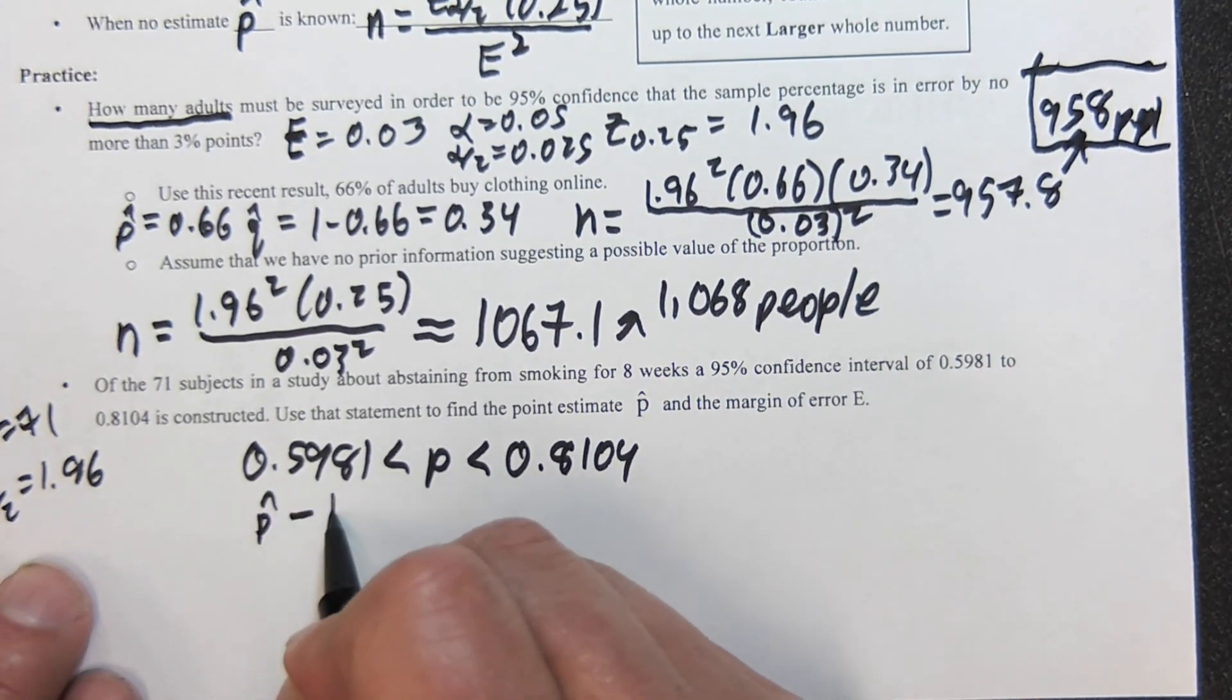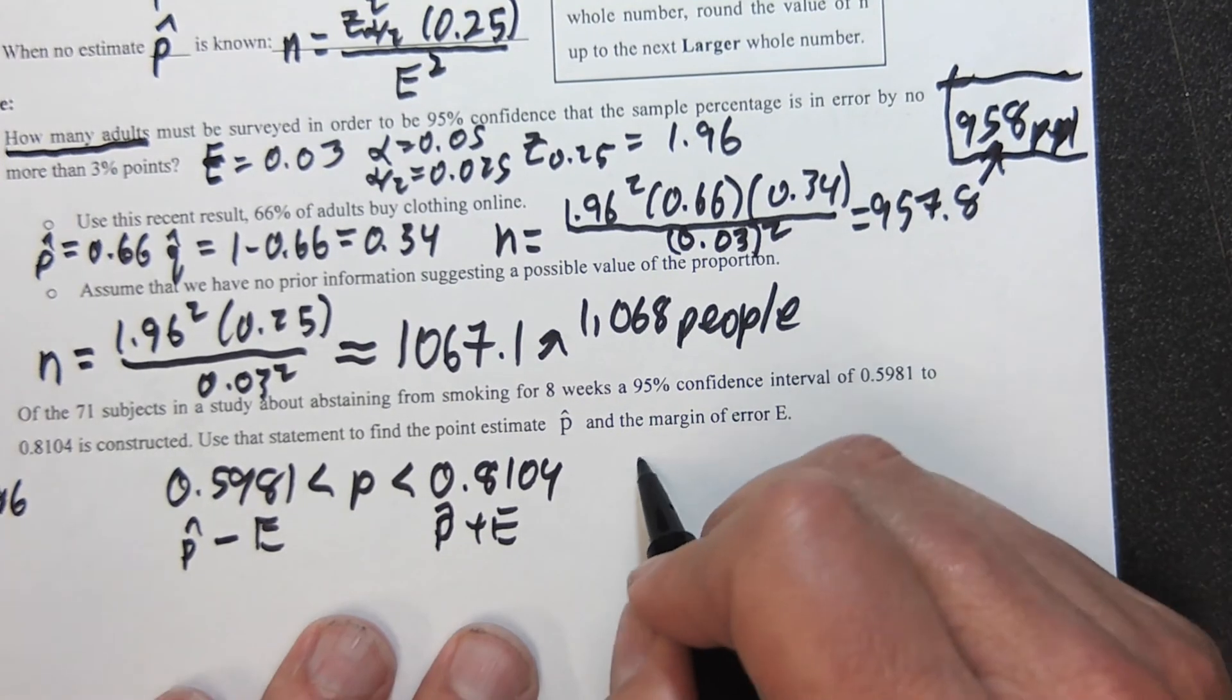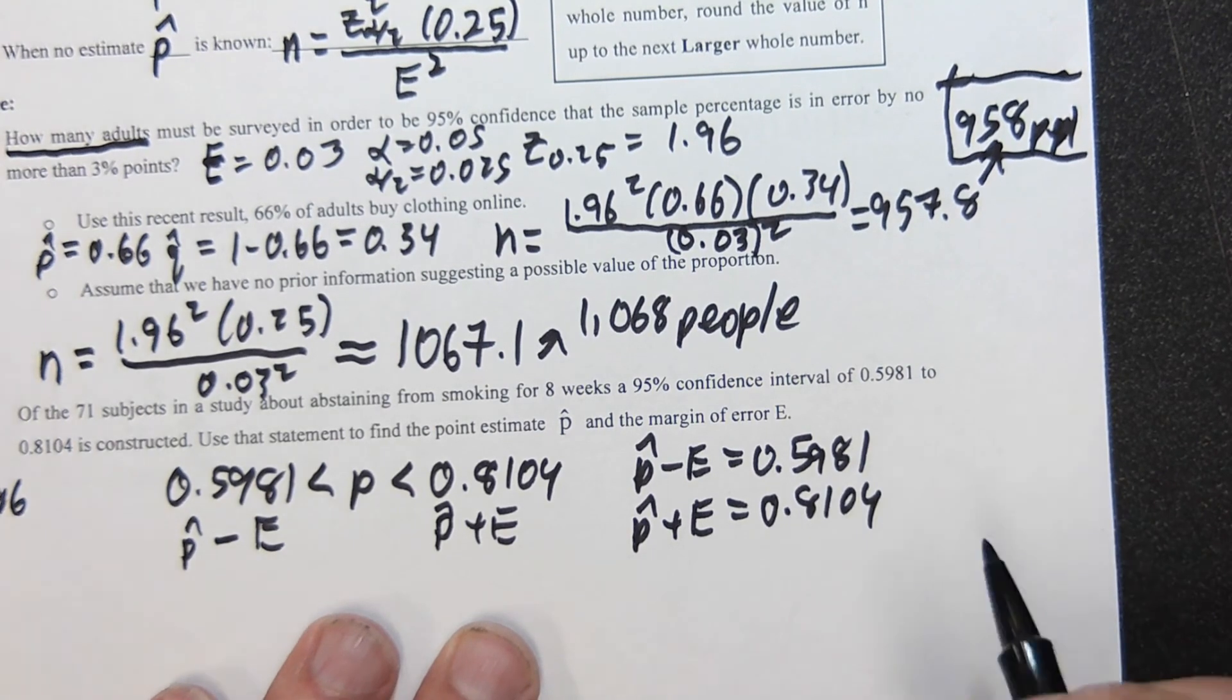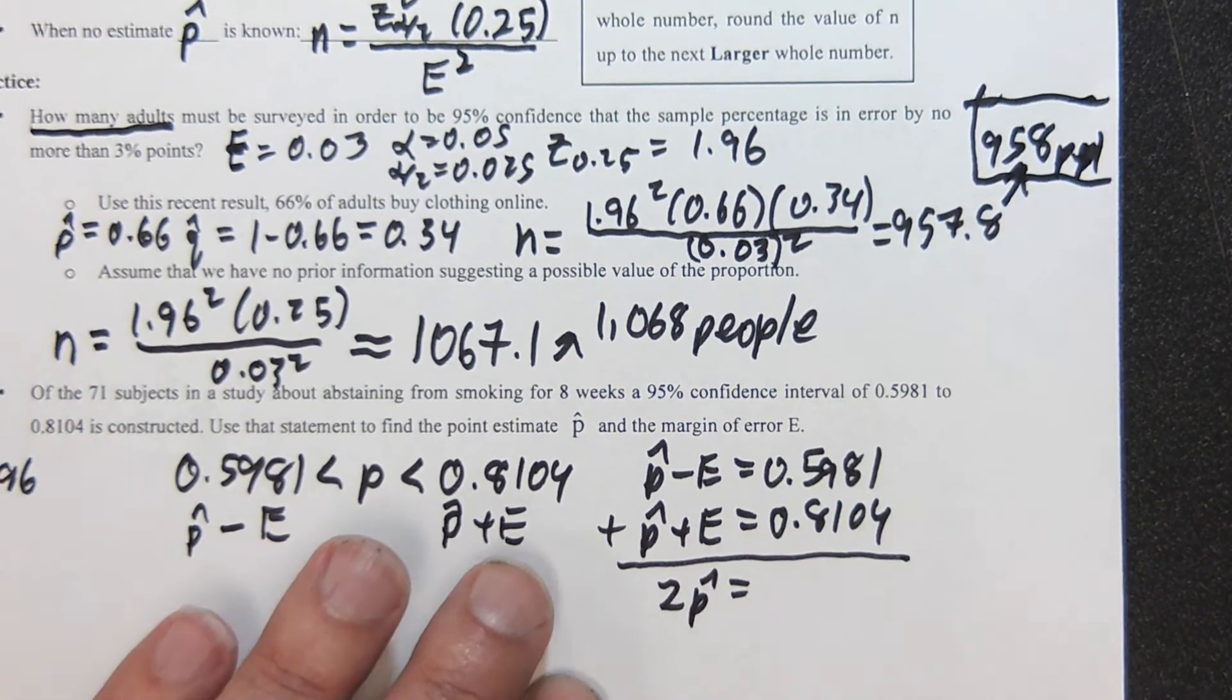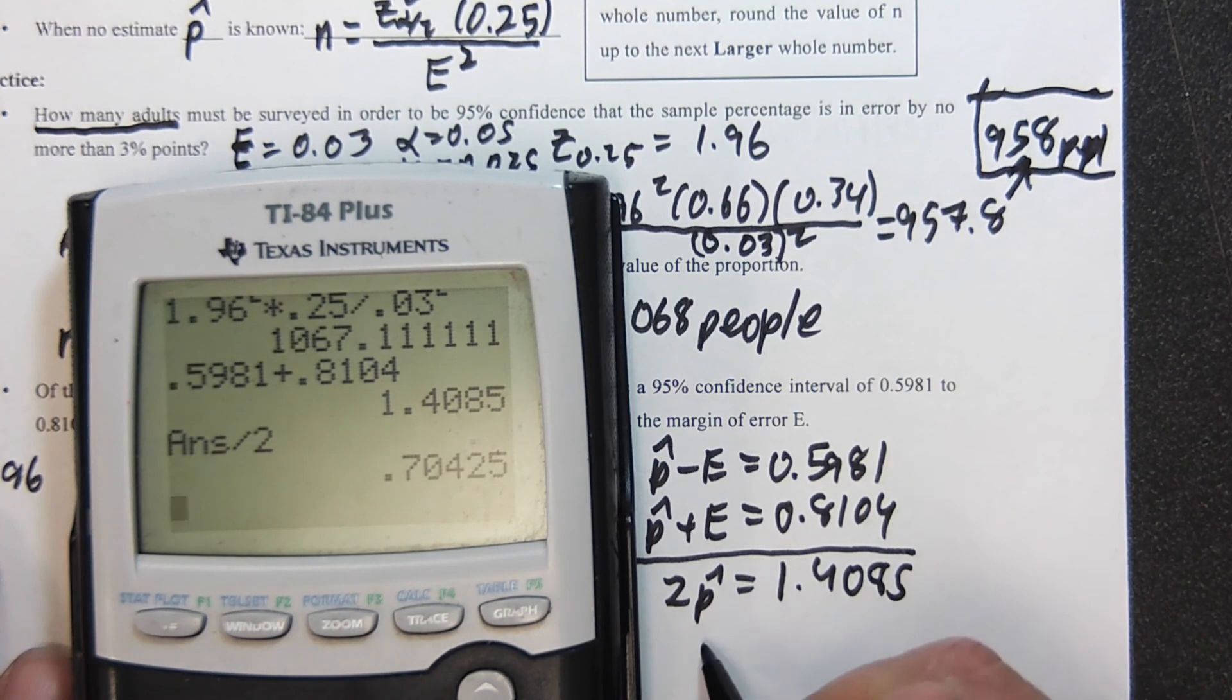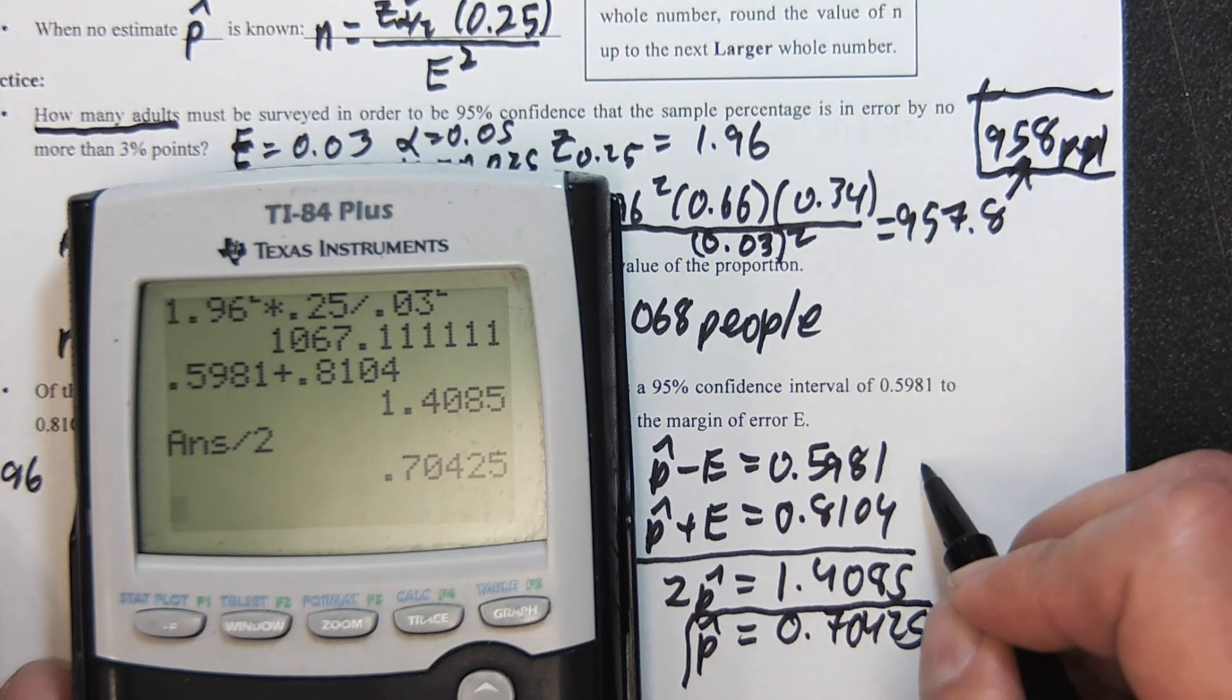Well, this is p hat minus e and this is p hat plus e, so we're actually going to end up with a system of equations. If you remember your algebra, I can eliminate the e, so I get two times p hat equals—let me add these up—0.5981 plus 0.8104, which is 1.4085, and divide that by two to get 0.70425.